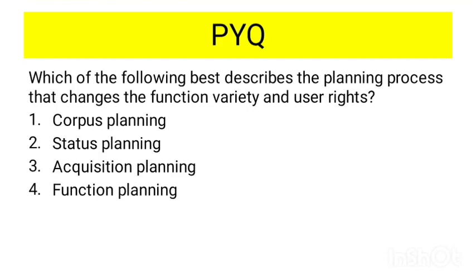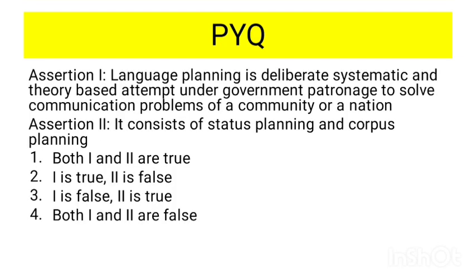Now let's look at some previous year questions. The first question asks which planning process changes the function, variety, and user rights — the answer is status planning, option two. The second question is assertion-based: Assertion 1 says language planning is a deliberate, systematic, and theory-based attempt under government patronage to solve communication problems; Assertion 2 says it consists of status planning and corpus planning. Both assertions are correct, so option one is the correct answer.